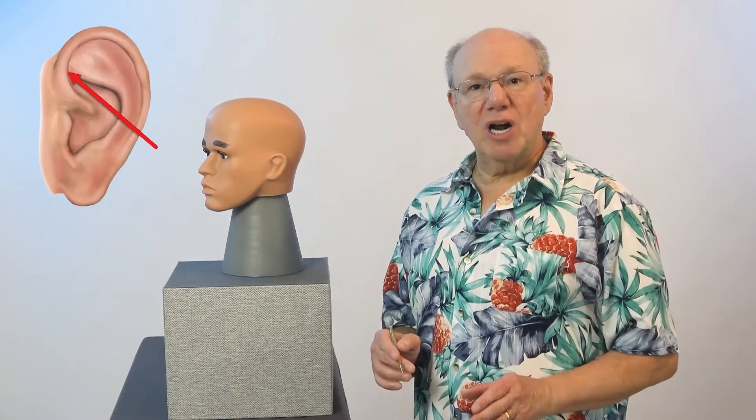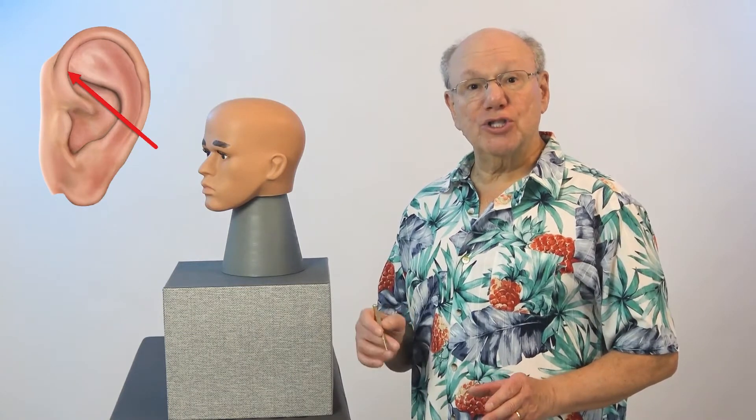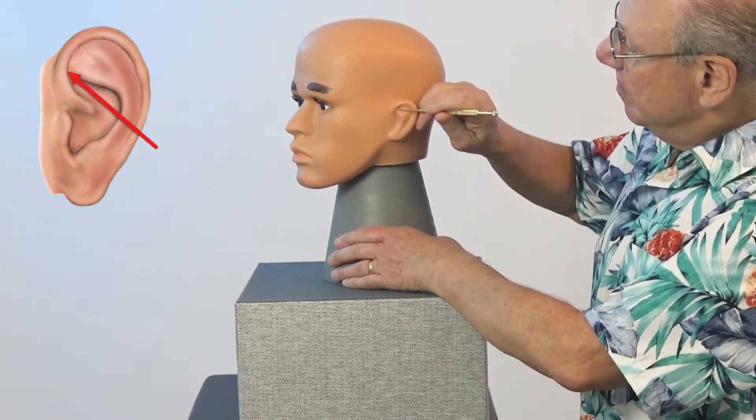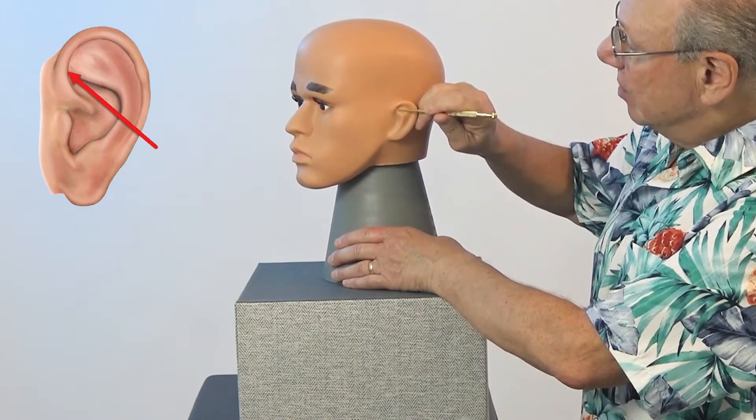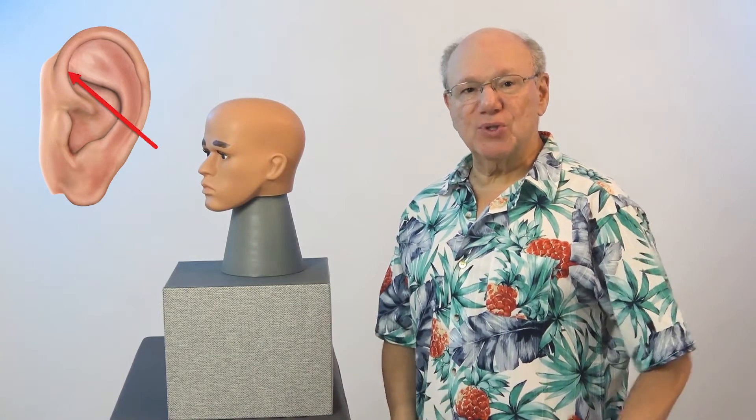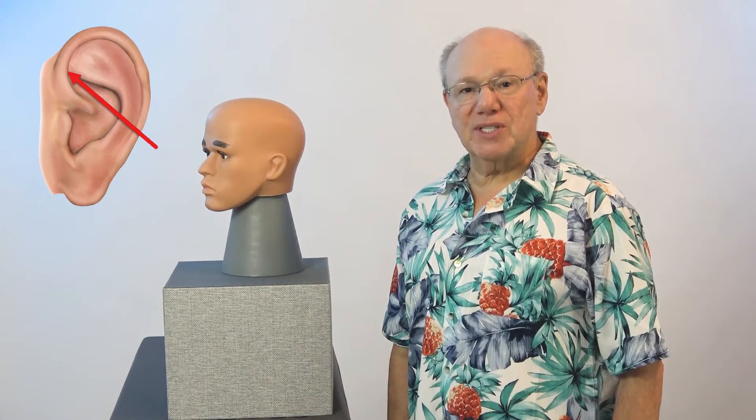To find the Master Autonomic Nervous System Point, look at your ear in the mirror. Then find the point where the lower branch meets the helix of your ear, right over here. Push in to find a point that is sensitive, sore, tender, or painful. That is the Master Autonomic Nervous System Point.